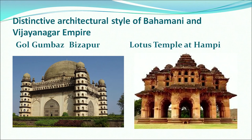Here you can look at two pictures: one is the Lotus Temple at Hampi, today a World Heritage Site, which is a perfect example of the architecture that developed in the Vijayanagara Empire. The other is the Gol Gumbaz at Bijapur, a good example of Bahamani architecture. This concludes the regional states that emerged after the breakup of the Sultanate.